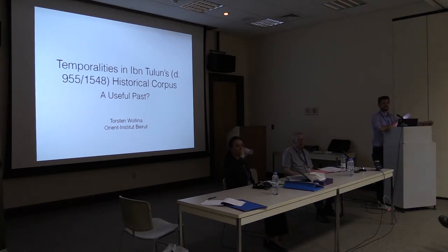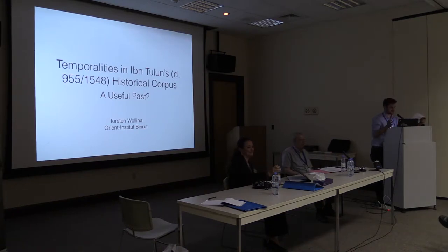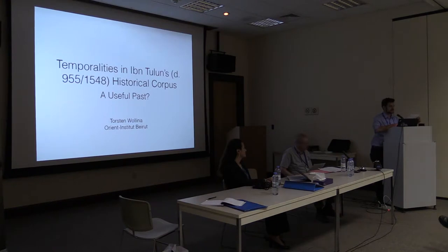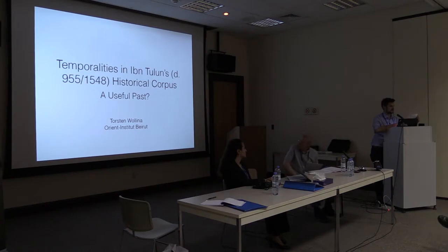I'm talking both about how contemporaneous authors tried to make the past into a useful past, and also I make some propositions on how our own analytic framework could be changed to reflect those changes and hybrid forms in the early modern period. I will do that on the basis of some investigations into the historiographical, biographical, and topographical corpus of the Damascene scholar Muhammad Ibn Touloun, and I will heed Achim Landwehr's cautious statement that the central question should be how time is realized and used, not what it is.